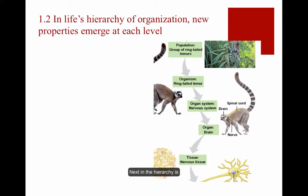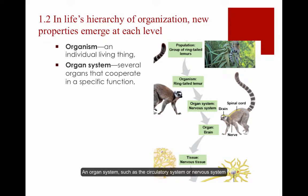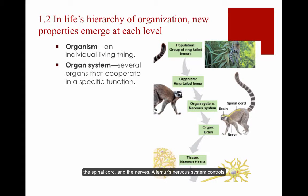Next in the hierarchy is the organism, an individual living thing. Within a complex organism, such as a lemur, life's hierarchy continues to unfold. An organ system, such as the circulatory system or nervous system, consists of several organs that cooperate in a specific function. For instance, the organs of the nervous system are the brain, the spinal cord, and the nerves. A lemur's nervous system controls its actions, such as climbing trees.